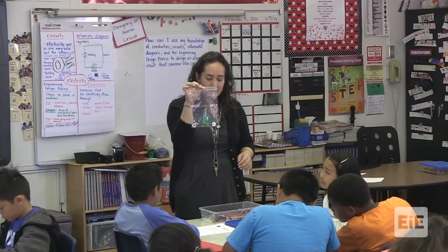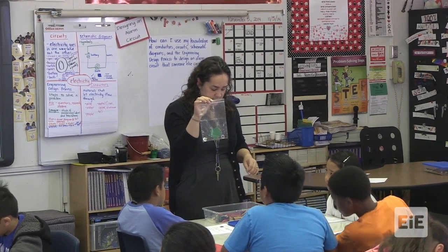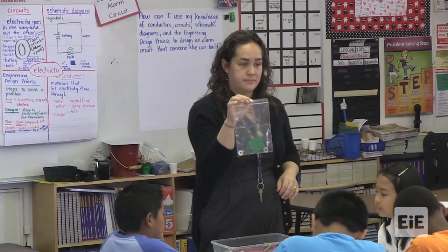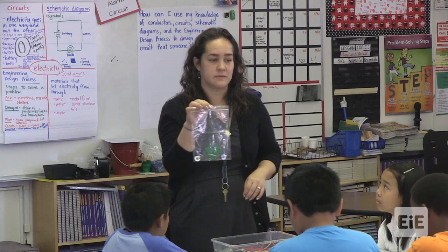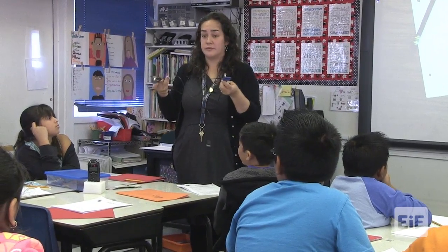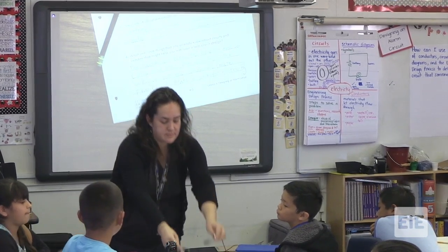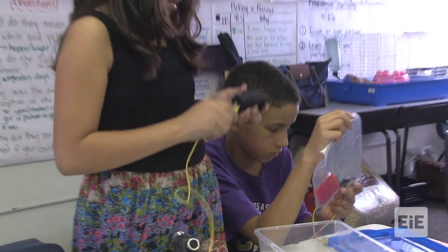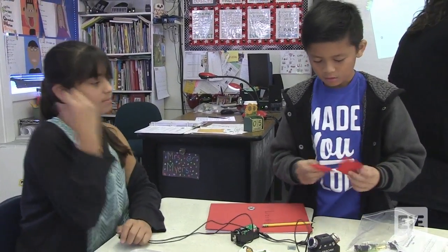In the bag are different materials. Your job is to test each material to see whether it is a conductor or — what's it called if it's not a conductor? Insulator. You're going to create this circuit and then take out your materials and test it. Fabric — it's not metal, so electricity can't go through it. It's not a conductor.